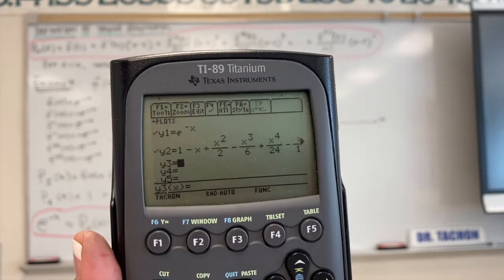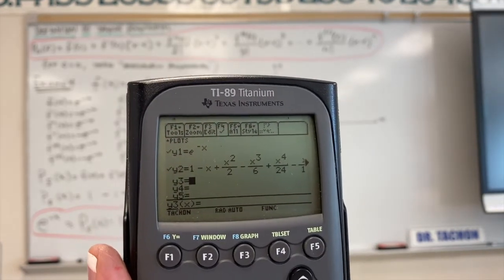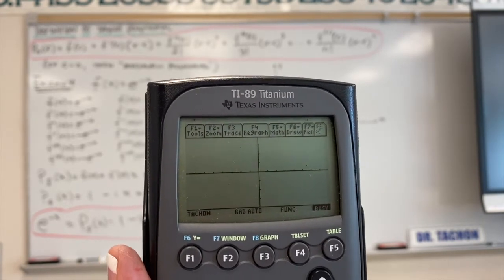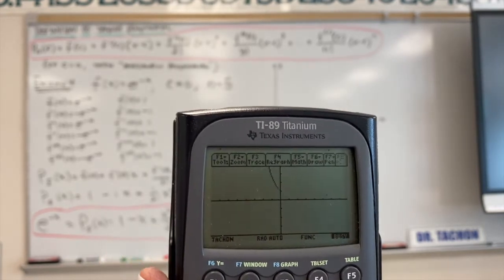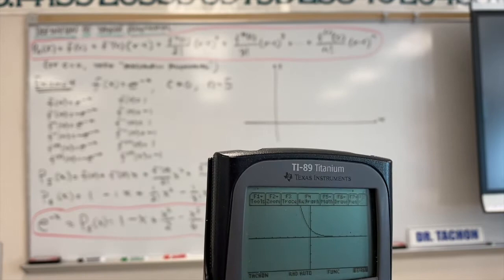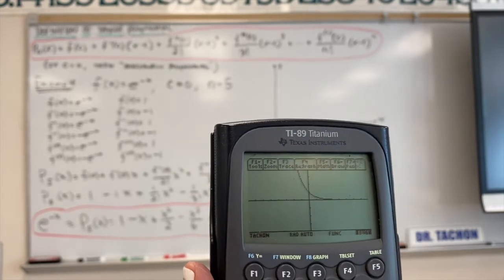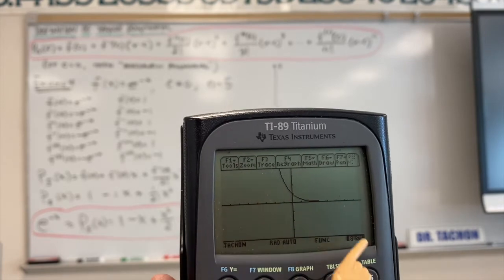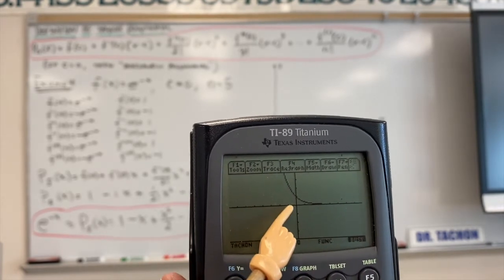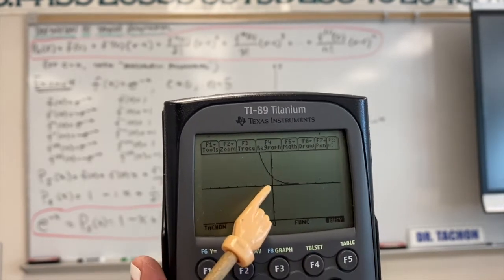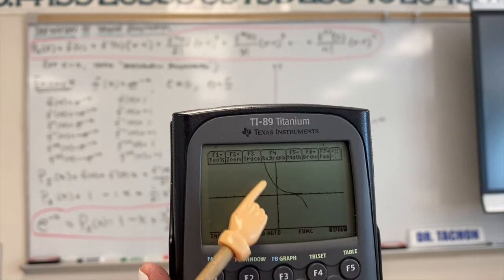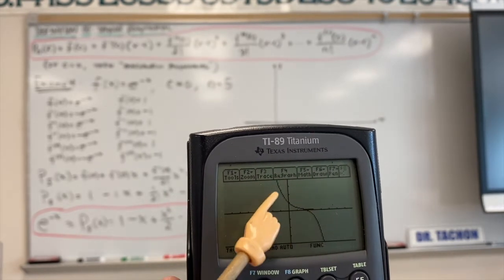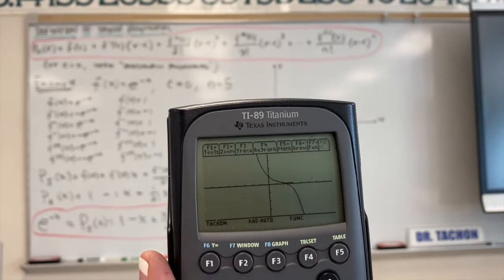I'll do a zoom — number four for a standard window. The first graph is e to the negative x. We're waiting for the polynomial to come in, and there's your polynomial graph. You can see the e to the negative x graph and you see what the polynomial graph did.